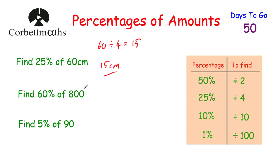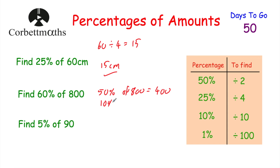To find 60% of 800: one approach is to get 10%, which equals 80, then do 6 lots of 80, giving 480. I would use 50% and 10%: 50% of 800 is half of 800, which is 400; 10% of 800 is 800 divided by 10, which is 80. Adding them together gives 480. So the answer is 480.